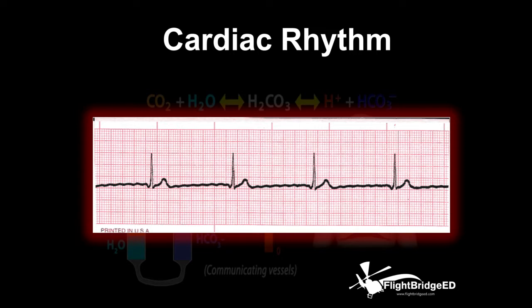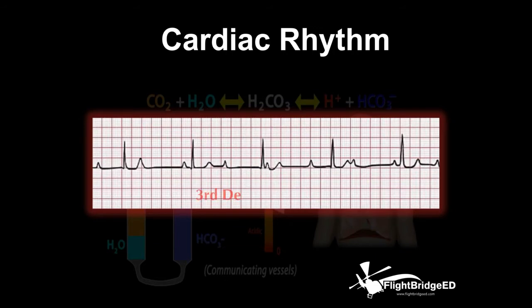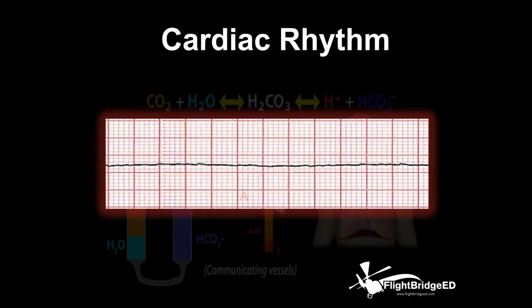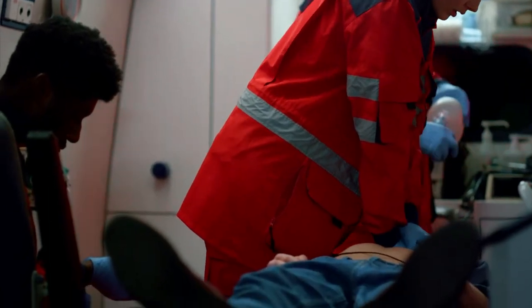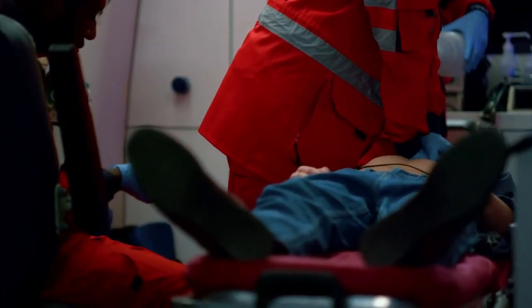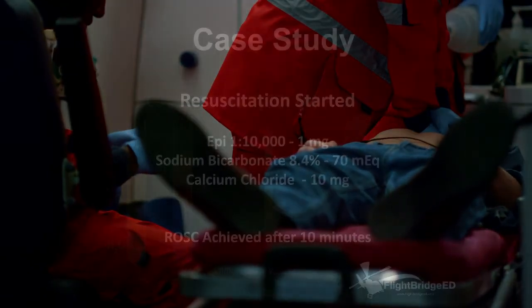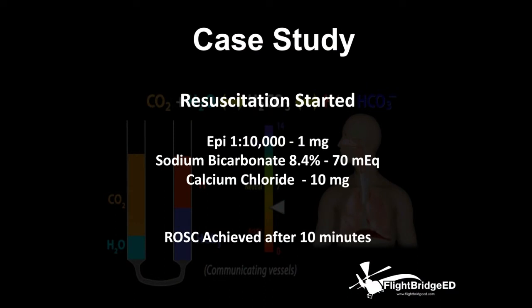As they transport this patient, they place him on the monitor and he's in a junctional rhythm. His mentation slowly changes and he converts into a third-degree heart block. Shortly after, the patient goes asystolic and into cardiac arrest. They start resuscitation — an IV was already established, they gave 1 mg of epi with concurrent chest compressions, airway management with BVM ventilations. They gave an amp of sodium bicarb, calcium chloride, and they have ROSC after 10 minutes.